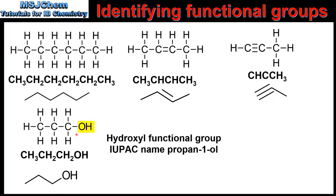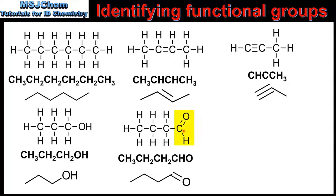In our next example we can see an oxygen bonded to a hydrogen which is also bonded to a carbon atom, so this is a hydroxyl functional group. A hydroxyl group is easy to identify in a condensed structural formula and a skeletal formula — in both types it is represented as OH.